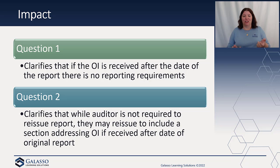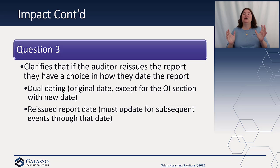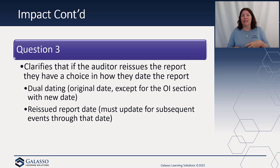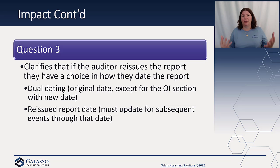This brings up the question of timing — what are we going to do in terms of the report date if we're going to reissue? There are two choices for dating the report. First, you can dual-date the report: keep the original date and then add 'except for the OI section, as of the new date.' You can also use the reissued report date — if you reissue it a couple months later, you can put the whole report as of that new date, however you do have to update for subsequent events through that new date.